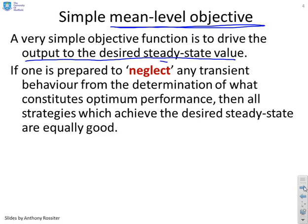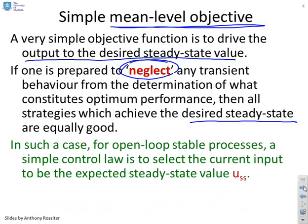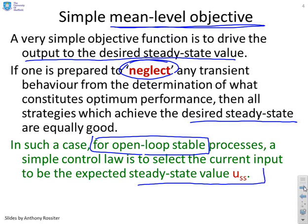If you're prepared to neglect, that's quite important, any transient behaviour from the determination of what constitutes optimum performance, then all the strategies you need to do is achieve the desired steady state, and any strategy which does that could be considered equally good. In such a case, and we've got an assumption here, we're talking about open-loop stable processes, a simple control law is just to select the current input to be the expected steady-state value.